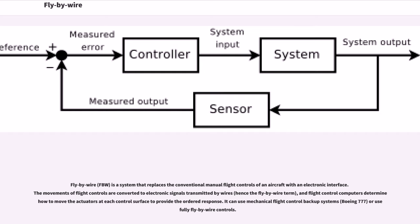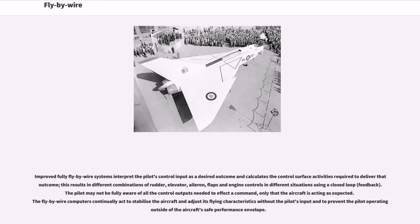FBW can use mechanical flight control backup systems, as in the Boeing 777, or use fully fly-by-wire controls. Improved fully fly-by-wire systems interpret the pilot's control input as a desired outcome and calculate the control surface activities required to deliver that outcome.